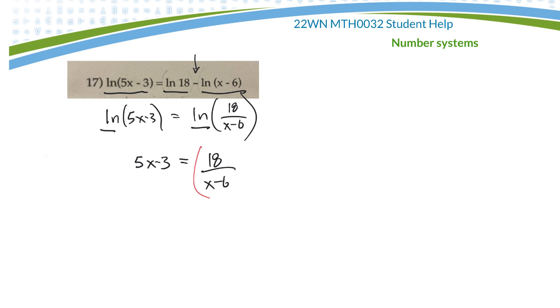To solve this now, I'll get rid of the x minus 6 on the bottom by multiplying both sides by x minus 6. The right side will cancel, and I'll wind up with x minus 6 times 5x minus 3 equals 18.